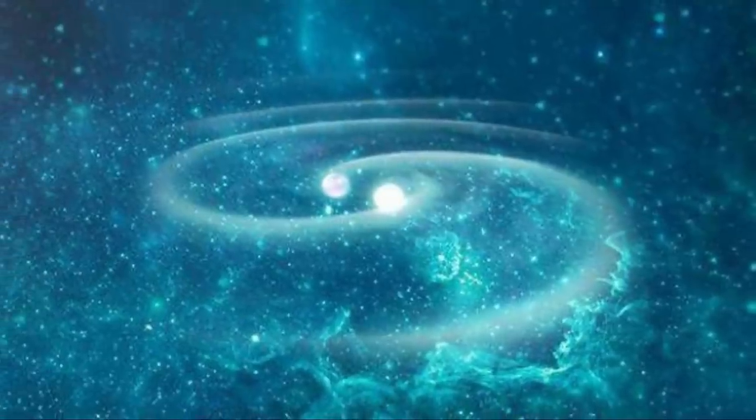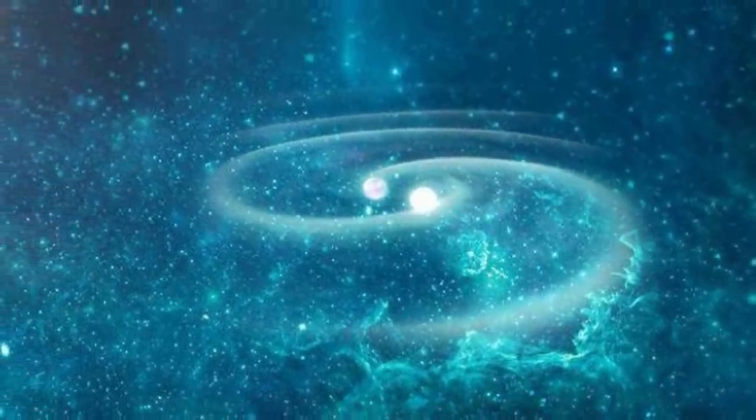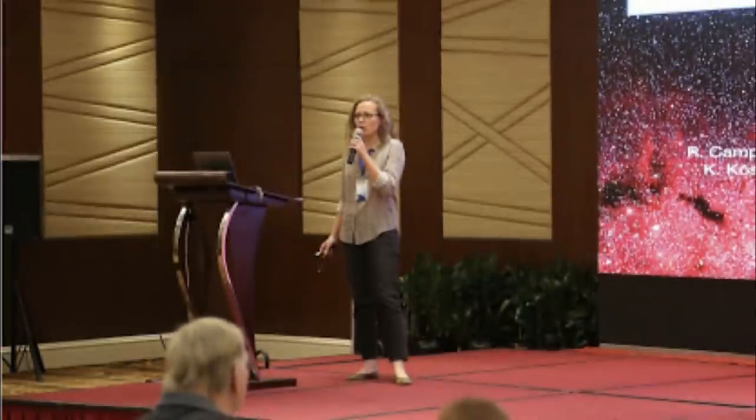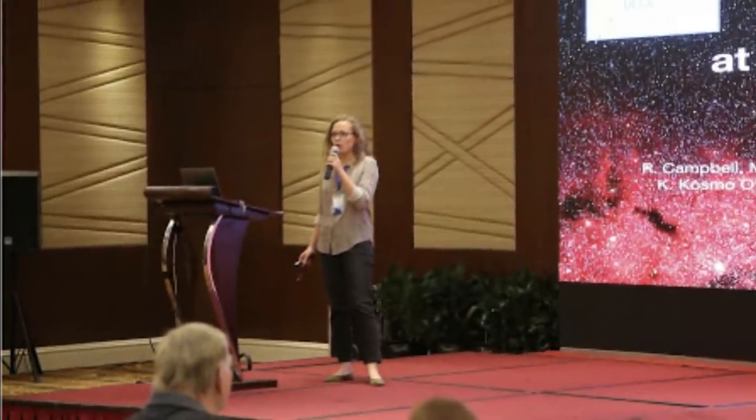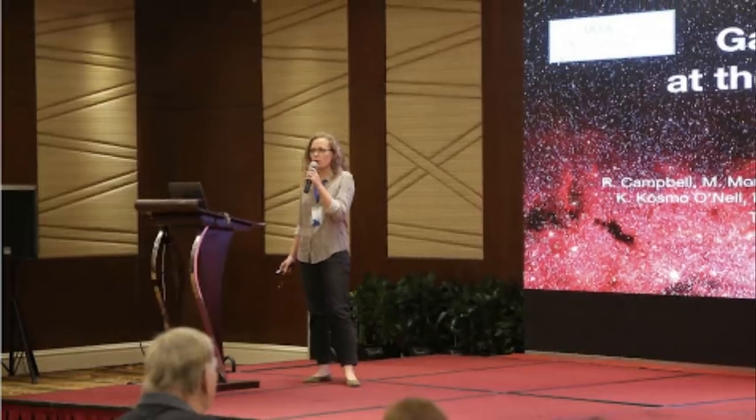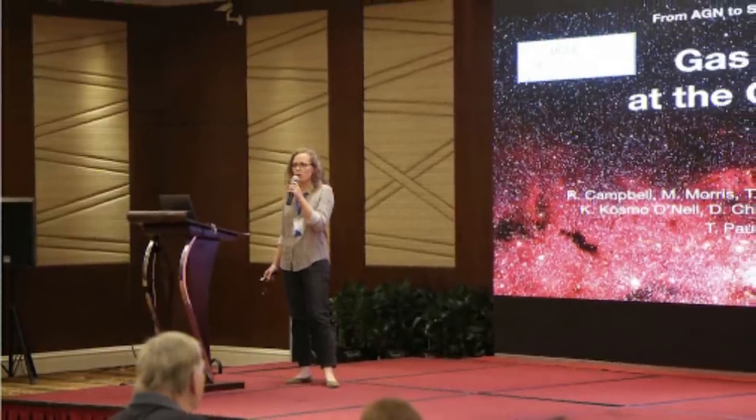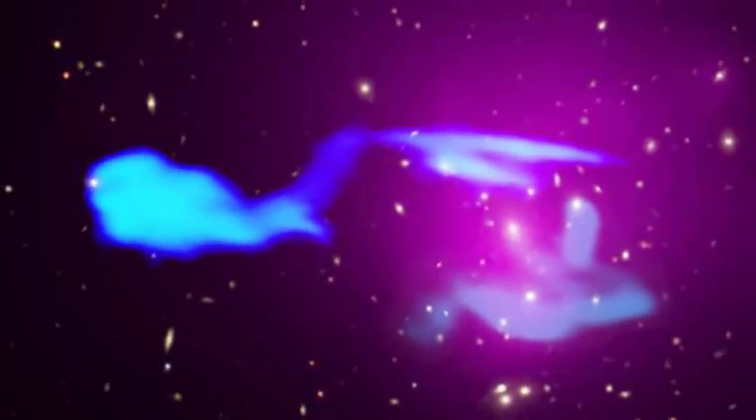Something must have kept G2 compact and enabled it to survive its encounter with the black hole. This is evidence for a stellar object inside G2. Basically, it means that in the vastness of G2, there is something like a star.